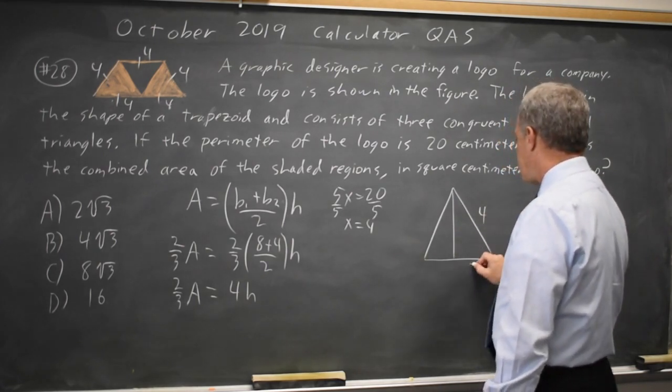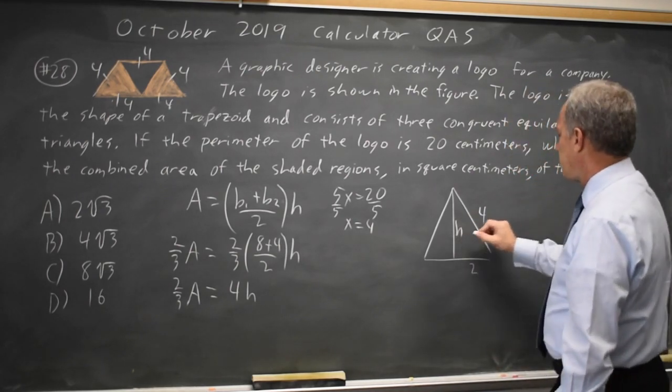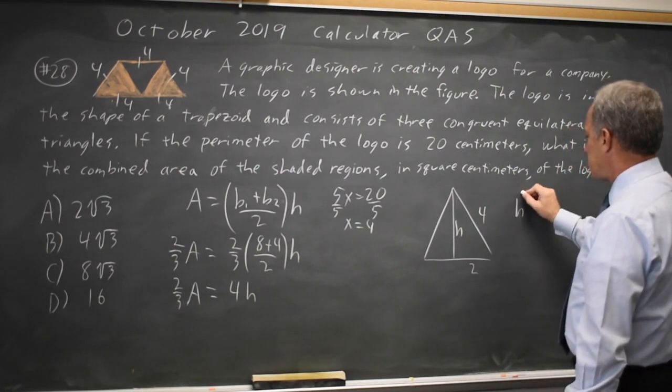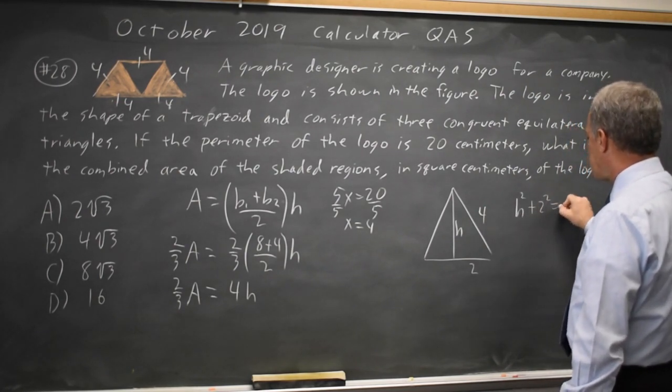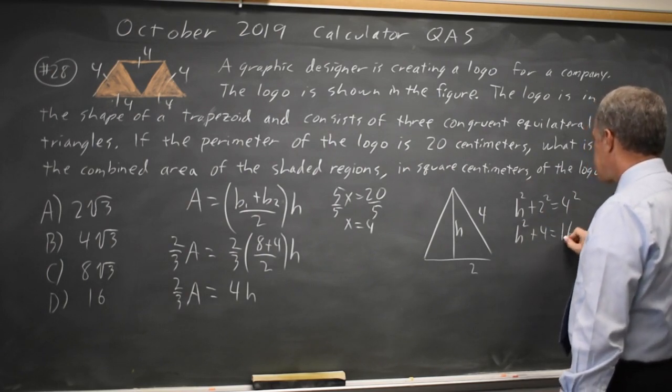If this side is 4 and this side is 2, our good friend Pythagoras would give us the height, which I'll call h. h squared plus 2 squared equals 4 squared. h squared plus 4 equals 16.